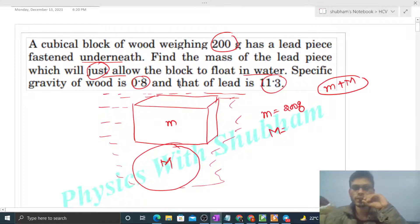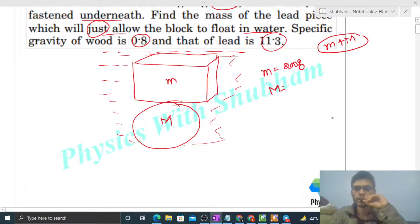So we can say ki agar ye jo system hai ye float karta hai then net force on the system that must be zero. So vertical direction mein iska jo weight lagega small mg and capital Mg, woh balance ho jayega from the buoyance force.